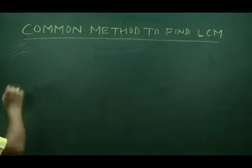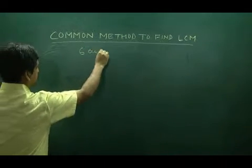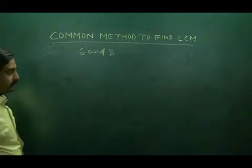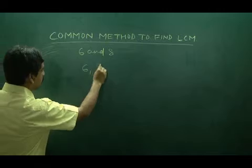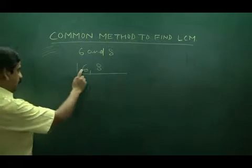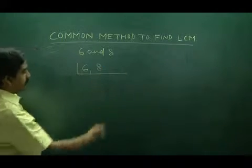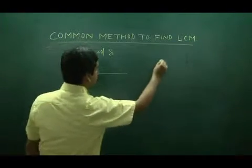Suppose the two numbers are 6 and 8. Write these numbers in a straight line. Divide the numbers by the least prime number. The least prime number is 2.